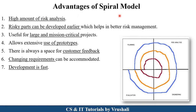The advantages of the spiral model: The first and most important advantage is that risks are identified and solved before actual development starts. The spiral model is used in large and mission-critical projects. Customer feedback is taken after each development cycle, making customer interaction a key advantage. Customer requirements can continuously change — there are no fixed requirements — and prototypes are created to solve all errors before the final product.